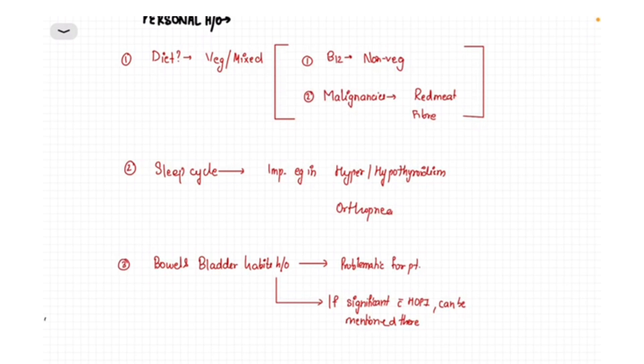The significance of this is like if the patient is continuously on vegetarian diet and we suspect that it's a case of anemia, in that case we should highly suspect that the patient might have B12 deficiency as we get B12 mainly from animal meat.